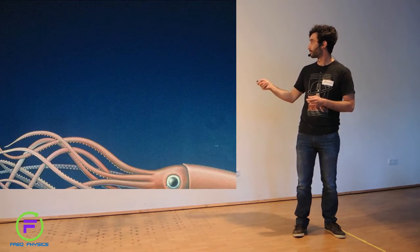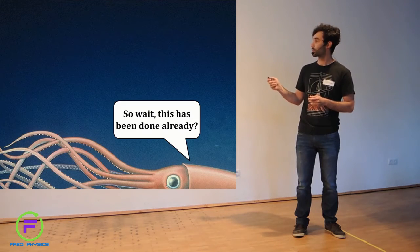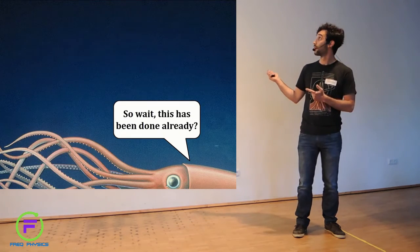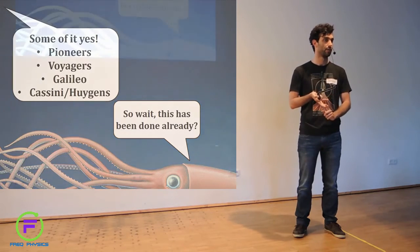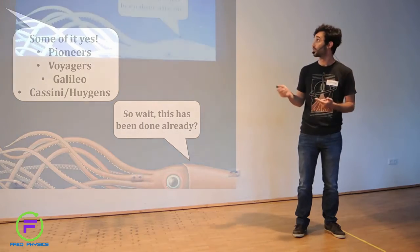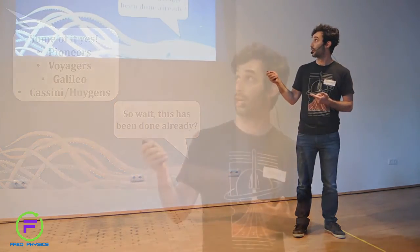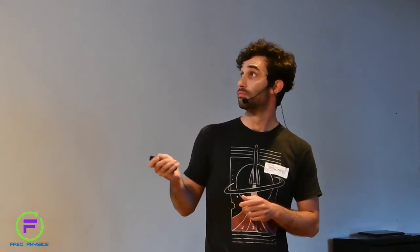We have a curious squid here asking, has this been done already? Some of it, yes. From the 70s we have had missions that have flown by the giant planets or have been in orbit. Those are their names, those in the 70s. And this is Cassini, which is actually going to be deorbited in a month or something. It's going to fly into the atmosphere of Saturn.